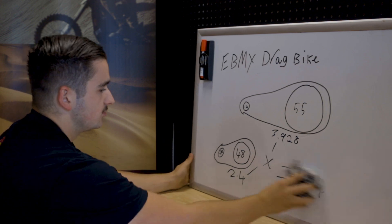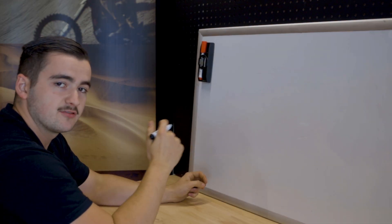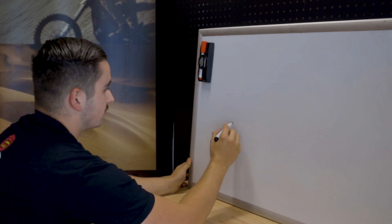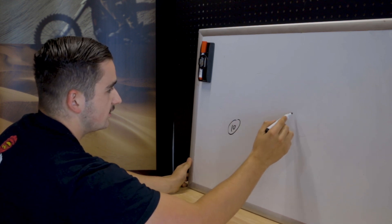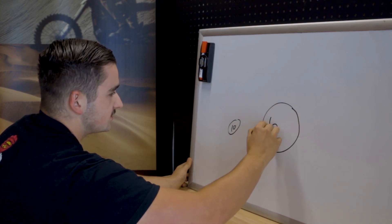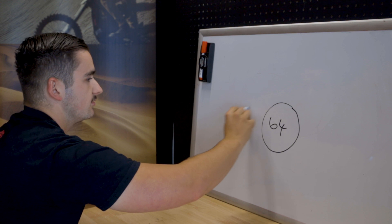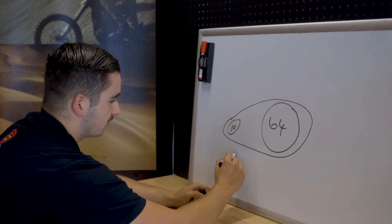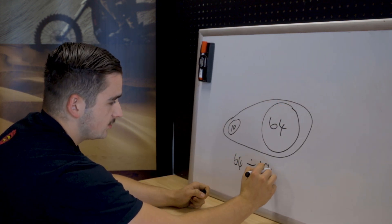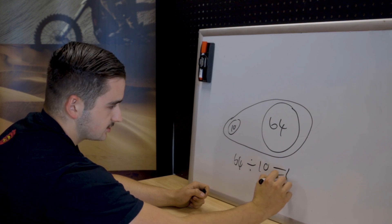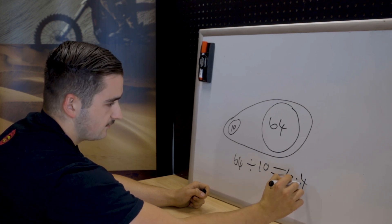Now say if it was really simple and we had no secondary drive. For instance my custom bike which is a 10 in the front and is a 64 in the rear. All we have to do is one calculation. 64 divided by 10 which gives us 6.4.